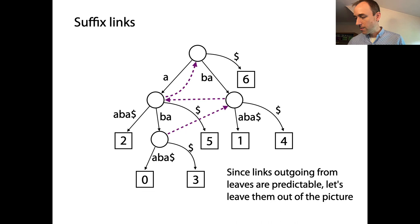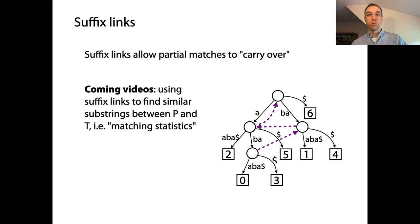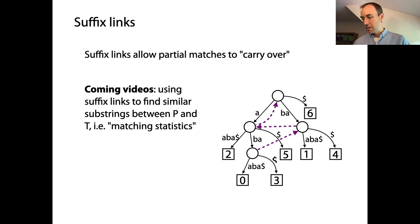These suffix links, which Ukkonen's algorithm both uses and constructs for you as part of its output, allow partial matches to carry over into the next match we're trying to find. This lets us find maximal substring matches between a query and a text. In coming videos, we'll see how to use suffix links to find similar substrings between a pattern and a text using the idea of matching statistics.